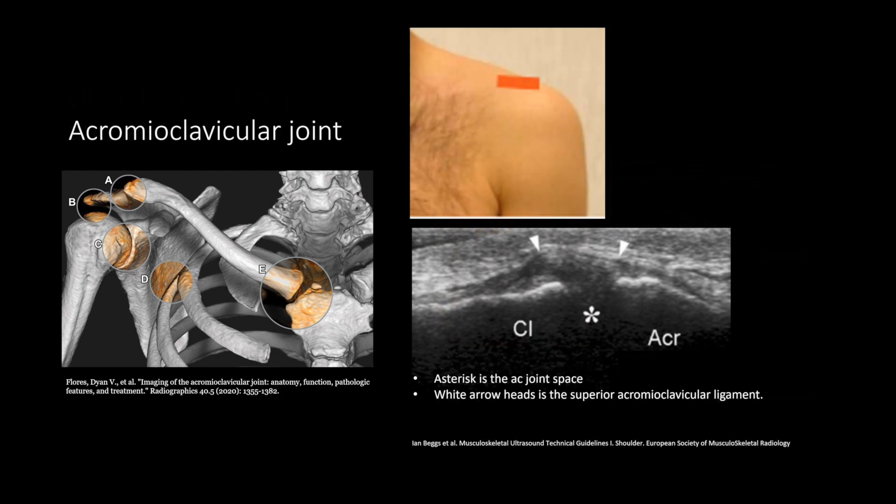At the top of the shoulder, you can find the acromioclavicular joint. The normal width is approximately three to four millimeters. If there's any question, compare it with the contralateral side; there shouldn't be more than a two to three millimeter difference. Make sure to sweep through the AC joint to look for an os acromiale.